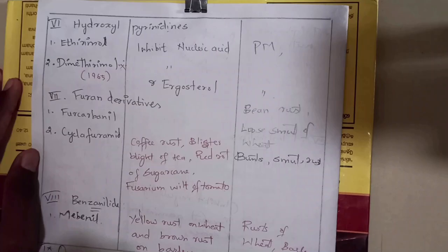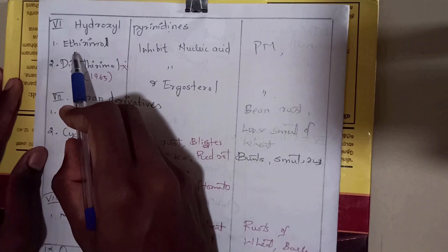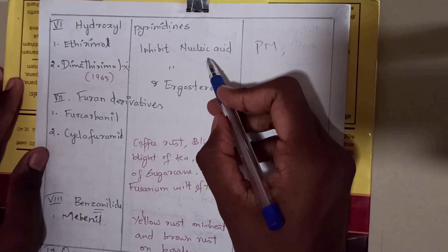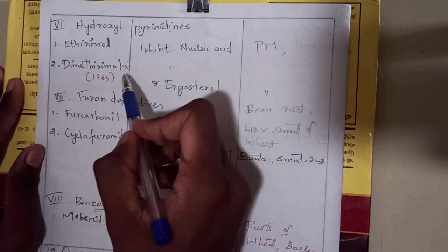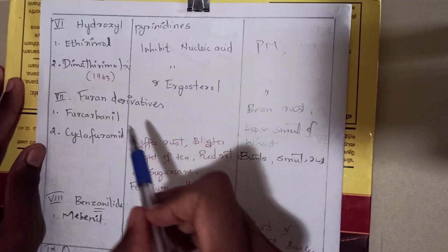The sixth group is hydroxyl pyrimidines. The first compound is ethirimol, used against powdery mildew, inhibiting nucleic acid formation. The second compound is dimethirimol, an important compound produced in 1965, used against powdery mildew; its mode of action inhibits nucleic acid formation and ergosterol formation.